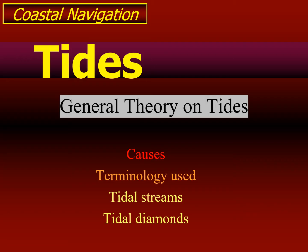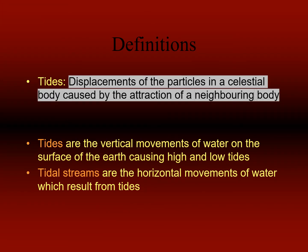Tides are basically the periodic and vertical rise and fall of sea levels, which are caused by the gravitational forces exerted by the moon and the sun and the rotation of the earth. Mariners need to have an in-depth knowledge of the tides for planning their passage as well as for safe navigation — whether transiting waters of different depths, ensuring sufficient underkeel clearance, or transiting under bridges. Mariners need to extract information from tide tables, tidal streams, or tidal diamonds and apply that to their vessel.